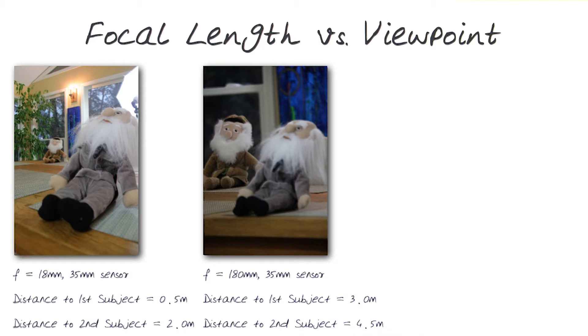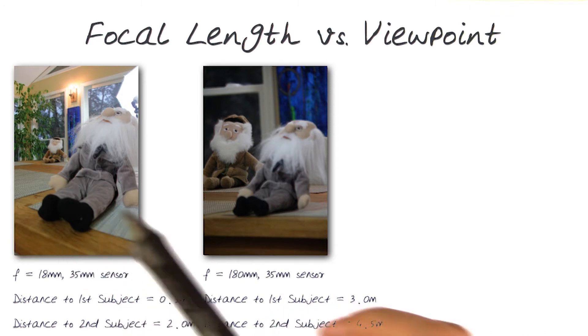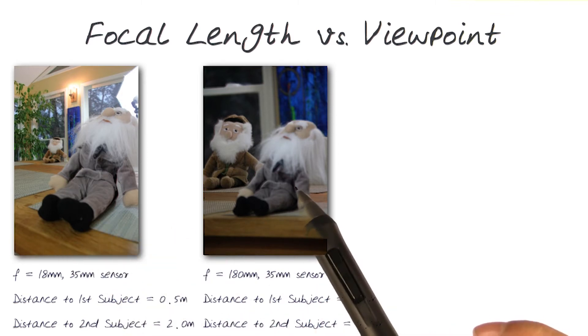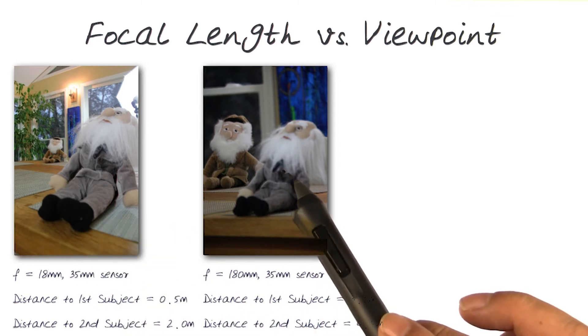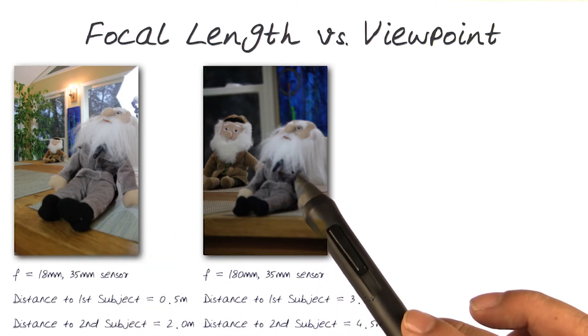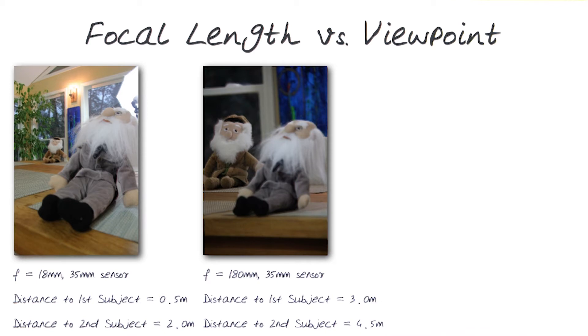That meant the distance to the second subject is also now 2.5 meters more, at 4.5 meters. This is exactly the same scene shot with two different focal lengths, but the same camera.